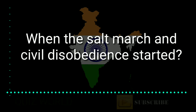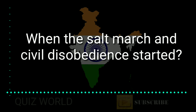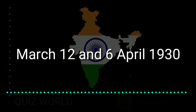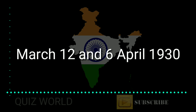When did the Salt March and Civil Disobedience Movement start? Answer is March 12th and 6th April 1930.